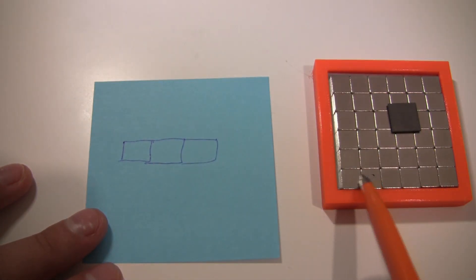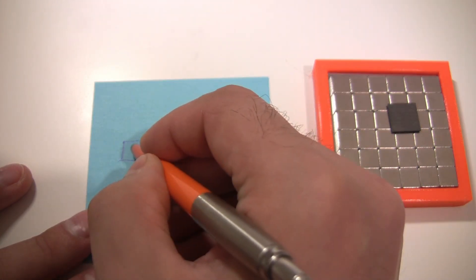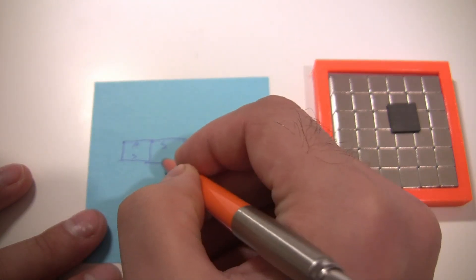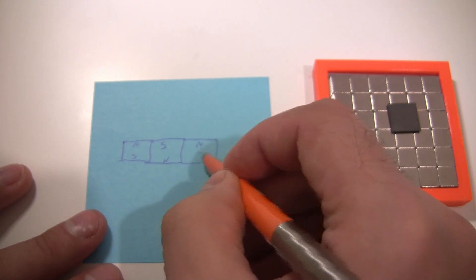Now, in order for these magnets to stick together, you're going to have an arrangement something like: north-south, south-north, north-south.